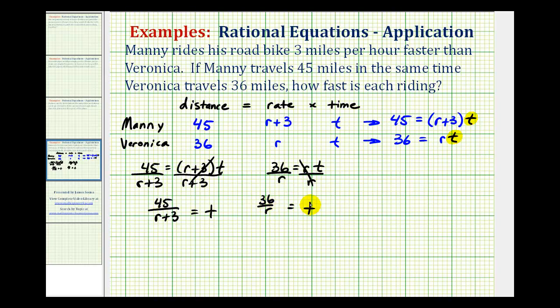Again, remember, we know that these two times are equal to each other. So if these two t's are equal to each other, then 45 divided by the quantity r plus three must be equal to 36 divided by r.